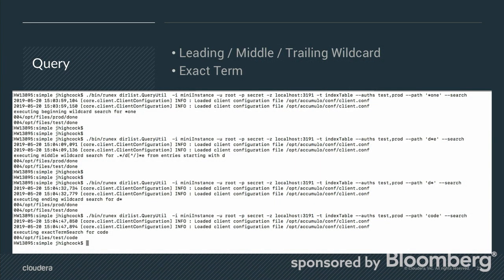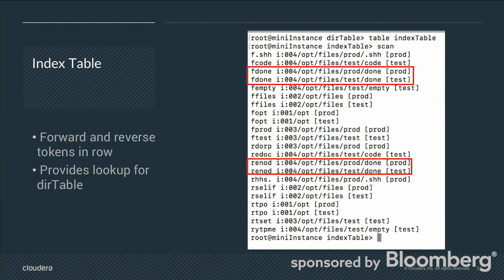The query utility that comes with the dirlist example supports leading, middle, and trailing wildcards. In the first example we search for asterisk-O-N-E. If you only had forward indexing and were looking for all records ending with 'one', you'd scan your whole table. But if you store it in reverse, you can begin at E-N-O and stop when you no longer have a match — a much smaller subset. That's why reverse indexing is important: the thing you're looking for is sorted further to the left.